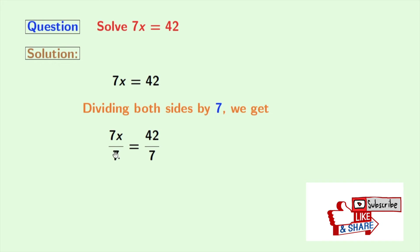Now as 7 is both the numerator and the denominator, this gets cancelled. And we are left with x.